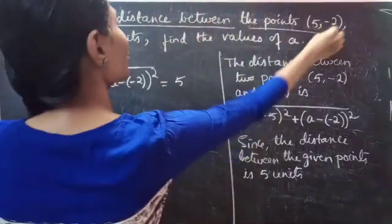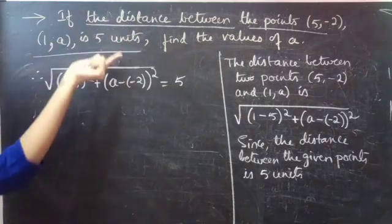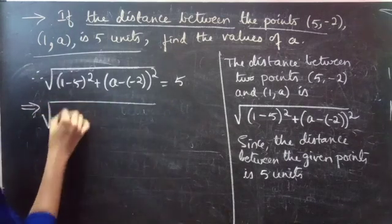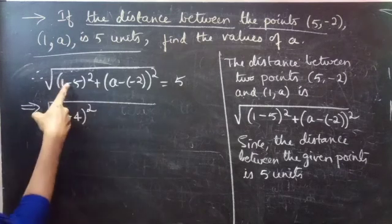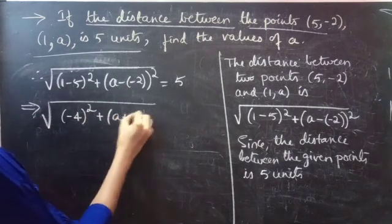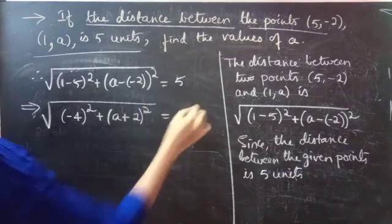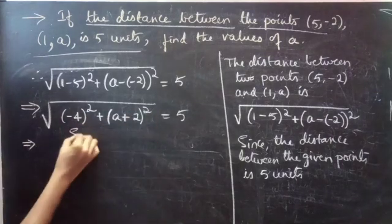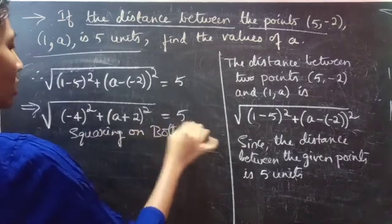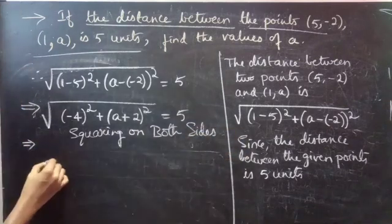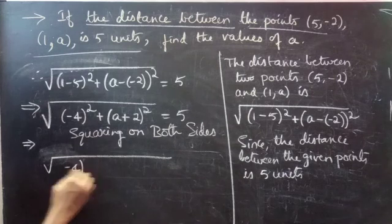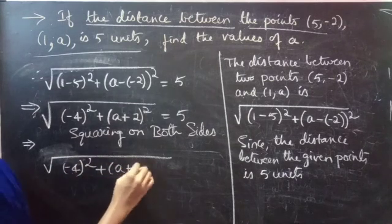Using this condition, we get square root of (1 minus 5) which is minus 4, whole square, plus (A plus 2) whole square equals 5. Now squaring on both sides: square root of minus 4 whole square plus (A plus 2) whole square equals 5 square.